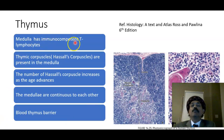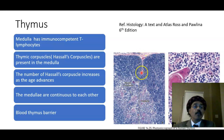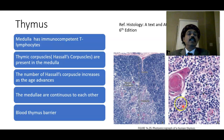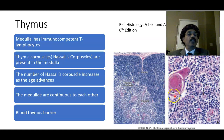The medulla has immunocompetent T lymphocytes. The trabeculae contain blood vessels and arise from the capsule. The thymic corpuscles are present in the medulla — they are the degenerated parts of the thymic epithelial reticular cells arranged in a concentric, whorled appearance with keratin concentrated in the center.